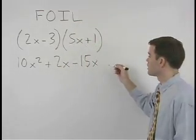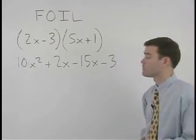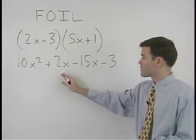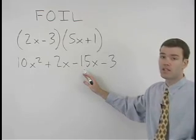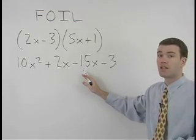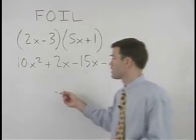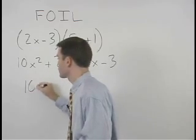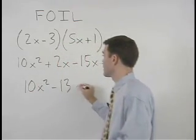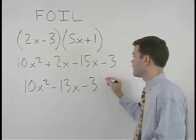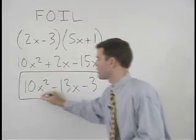positive 1, which is negative 3. Notice that positive 2x minus 15x simplifies to negative 13x, so we have 10x squared minus 13x minus 3 as our final answer.